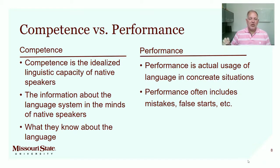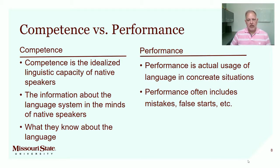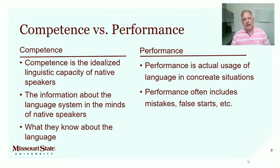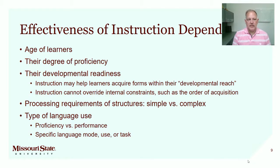Performance, on the other hand, is actual usage — what I'm doing right now. I'm engaging in performance, which is just a reflection of the competence that I have in English. What Chomsky would say about performance is that it is imperfect — there are often mistakes, false starts, I might use a wrong verb form. It doesn't mean necessarily that there's a systematic gap in my competence. So again, three key distinctions: implicit versus explicit learning, acquisition versus learning, and competence versus performance — and you can see how they align in significant ways.